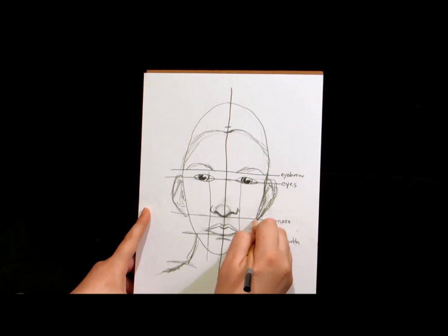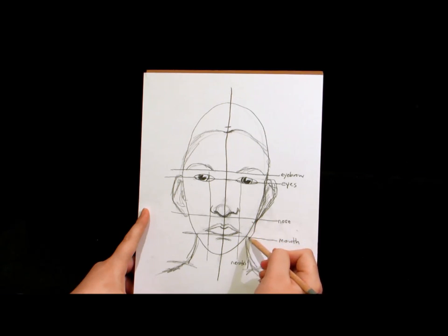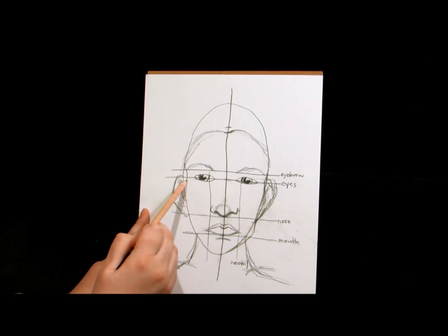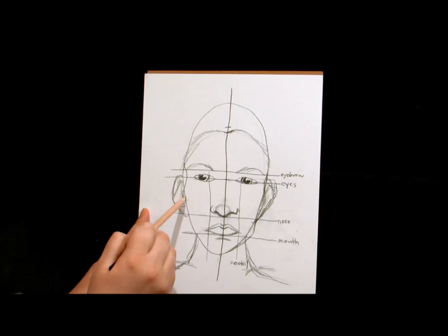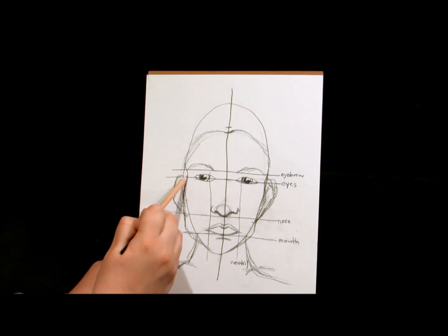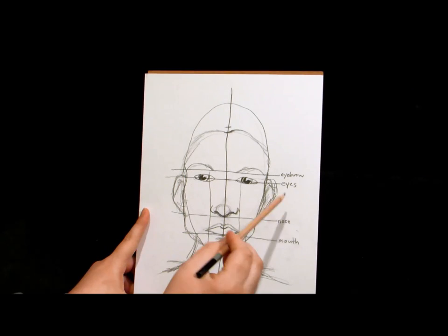Some people have a more square jaw. It comes out like that. Some people have a rounder jaw. So from here, you can just start playing, playing with shapes till that face becomes how you want it to look.